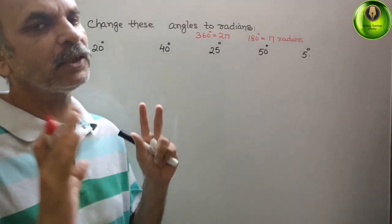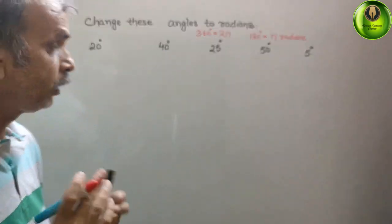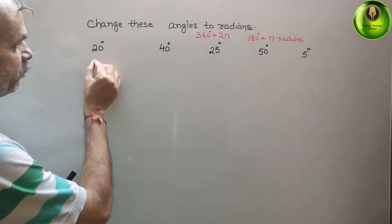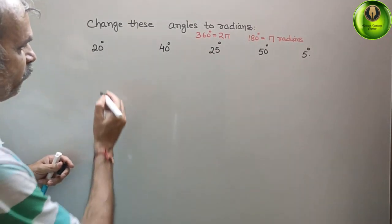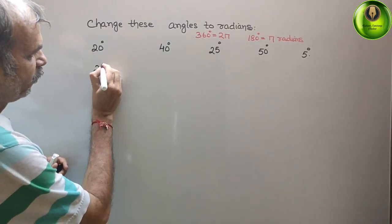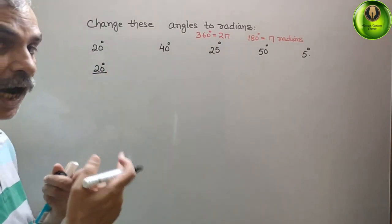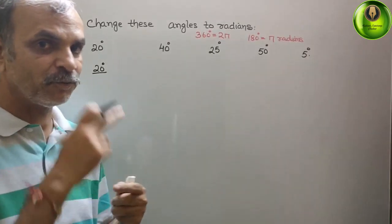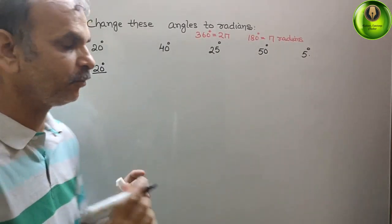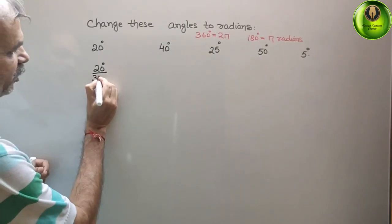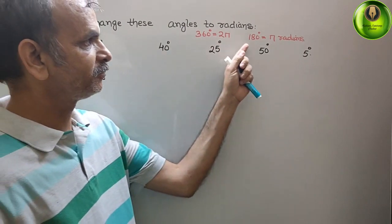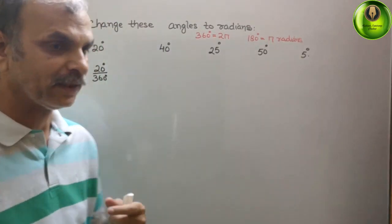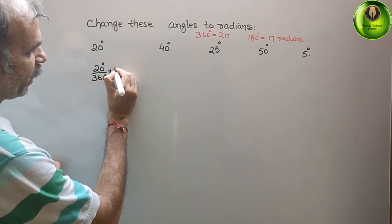The simple way is how? So, they have given you here 20 degree. So 20 degree, that means 20 degree is out of how much? Full circle, 360 degree of 2π, that means into 2π.